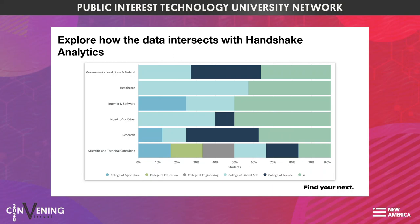Handshake's analytics tools make it really easy to dig into all of that data and see how it intersects. So you could be looking at institutional data alongside student interest data, or student action data. This really allows you to understand the profile of a student that might be a good fit for these types of opportunities. The report shown here displays the percentage of students interested in specific fields, broken down by college. You can build your own custom reports, or you can use pre-built templates that Handshake has curated to help get you started. Our analytics tools make it easy to slice and dice information and uncover trends about which types of students are interested in PIT jobs.